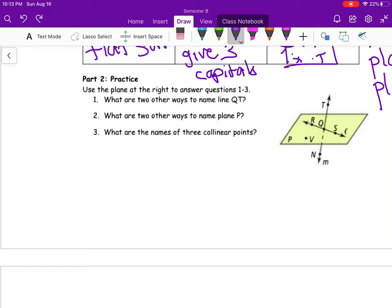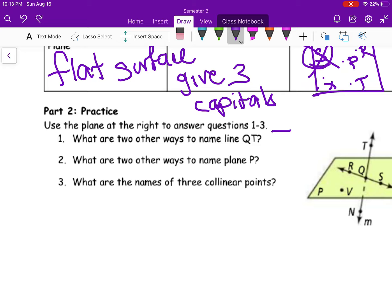So the first thing that comes to my mind without even looking at the picture is if we have a line, we need to put the arrows above going both ways and we can switch that. Line QT is the same thing as TQ.